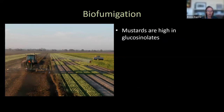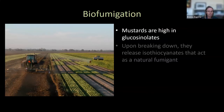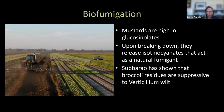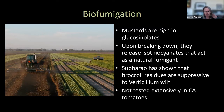Biofumigation uses mustard cover crops, which are high in glucosinolates. When you work the mustard residue into the soil, it releases isothiocyanates that can act as a natural fumigant — similar in action to Metam. Krishna Subbarao at UC Davis, based in Salinas, has shown broccoli residues are suppressive to Verticillium wilt on the coast. For California processing tomatoes, Jean Miao and colleagues tested mustards for Fusarium wilt control and found it was not effective in their trials, but this area needs more work.